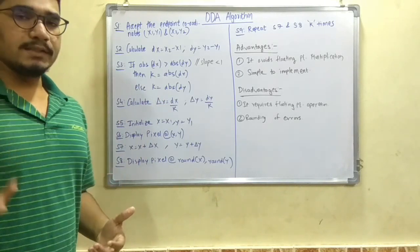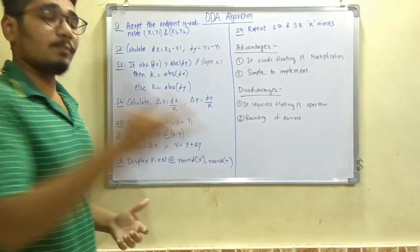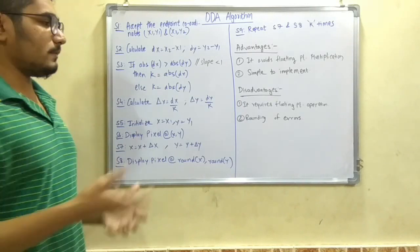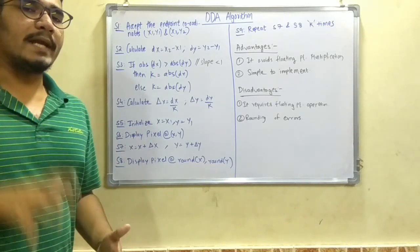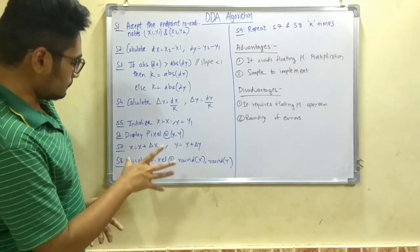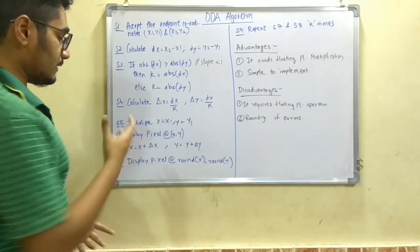So floating point addition basically, it requires floating point addition operations are required, not subtraction. Subtraction means sometimes it may come, but most of the times only additions are required. And as you can see, you round off these values in the step in.